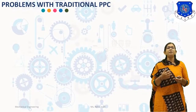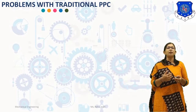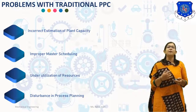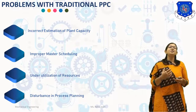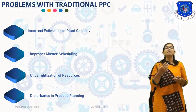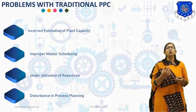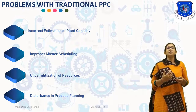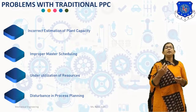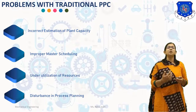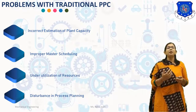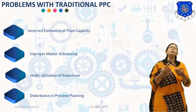Now we will discuss problems with traditional Production Planning and Control. The first problem is Incorrect Estimation of Plant Capacity. In traditional PPC, there is a lack of integration of all functions; therefore, updated data is not available centrally. This may result in incorrect estimation of plant capacity. Underestimation or overestimation of plant capacity may lead to faulty production planning.